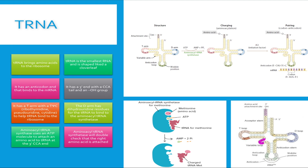Now let's talk about how this occurs. When an amino acid is bound to a tRNA molecule, this is called charging the tRNA. Aminoacyl tRNA synthetase uses one ATP molecule to charge the tRNA, meaning it uses one ATP to attach an amino acid to the tRNA at the 3' CCA end.